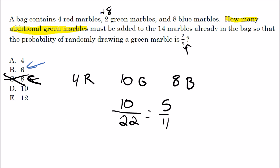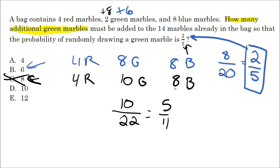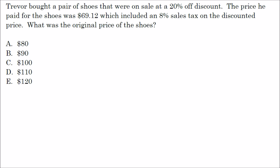Let's try six additional green marbles. Two plus six gives me eight green marbles; I still have four red and eight blue. The probability of getting a green marble would be 8 out of 20. If I reduce by dividing by 4: 8 divided by 4 is 2, 20 divided by 4 is 5 — that gives me two-fifths, which is exactly what we wanted. So six must be the correct answer.